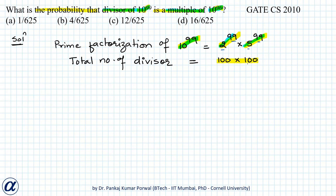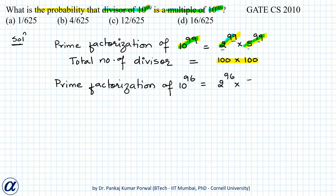Next, out of these 100 into 100 divisors, how many are multiples of 10 to the power 96? The prime factorization of 10 to the power 96 is 2 to the power 96 into 5 to the power 96. For any number to be a multiple of 10 to the power 96, 2 must appear at least 96 times and 5 must appear at least 96 times in its prime factorization.